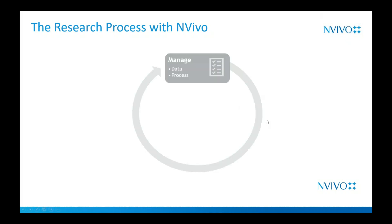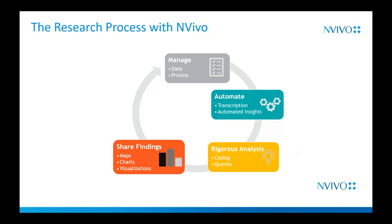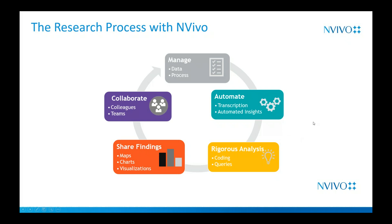Because we do have new users, I'd like to talk about the research process with NVivo. It helps you manage your data and your research process — it doesn't dictate to you. Whatever methods you're using, you use them within NVivo; it just helps you organize that. We have some automation tools with transcription, and automated insights for coding and sentiment. Also rigorous analysis — it'll help you with your coding and queries, share your findings with maps, charts, and visualizations. This is actually going to be pretty helpful when you're working on a team.